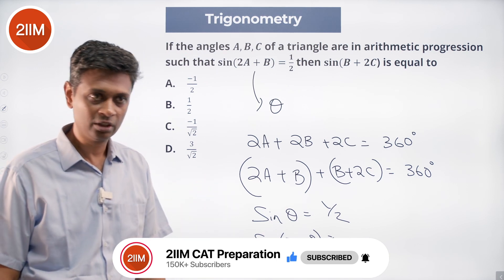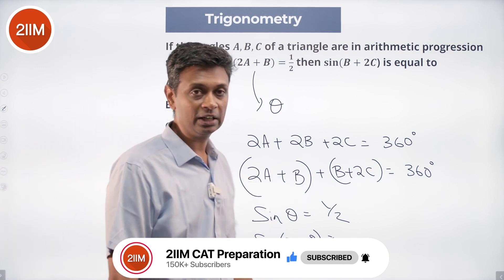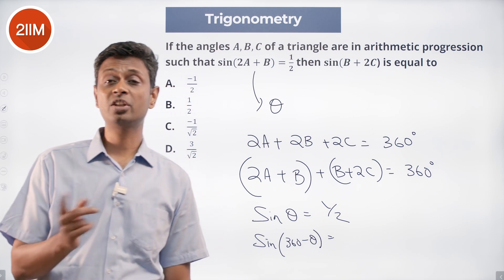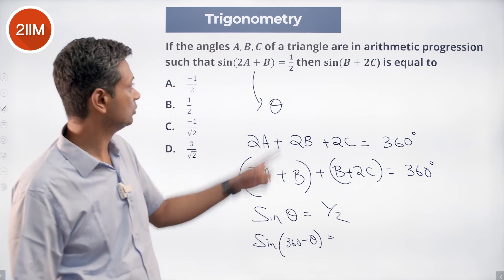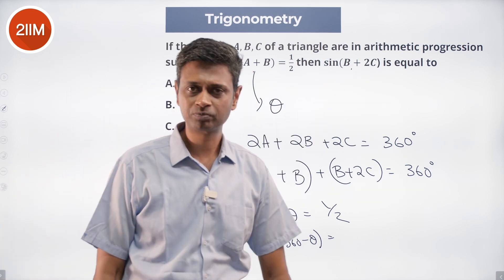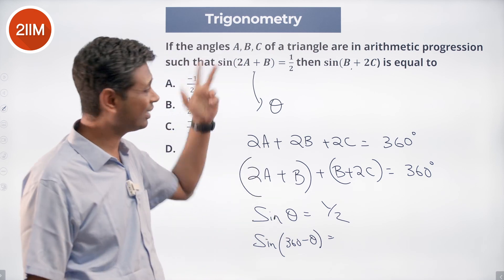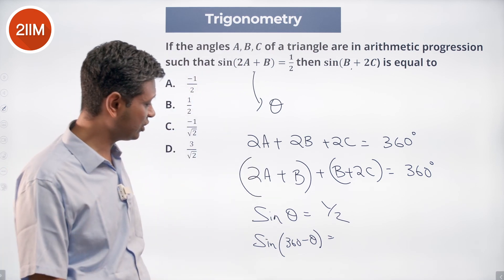These two angles add up to 360. So if 2A plus B is theta, then B plus 2C is 360 minus theta. This angle and this angle add up to 360. We know sine theta is half. What is sine of 360 minus theta?